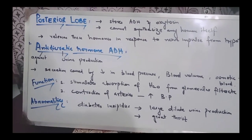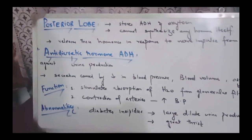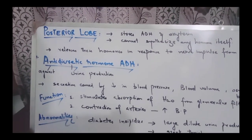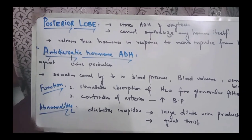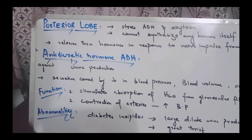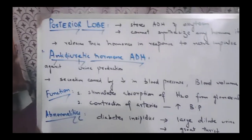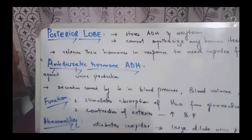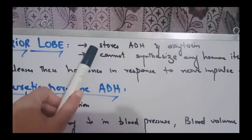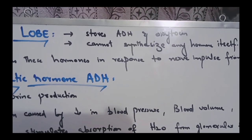We have three lobes: the anterior lobe, intermediate lobe, and the last one is the posterior lobe. The posterior lobe has two hormones: anti-diuretic hormone and oxytocin. It stores both anti-diuretic hormone and oxytocin.